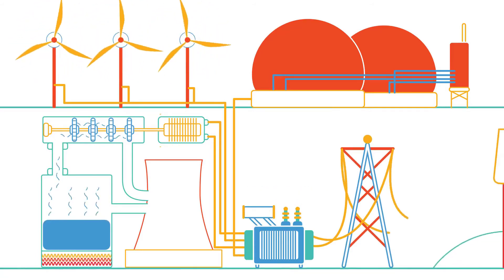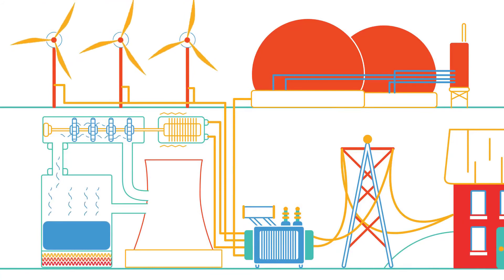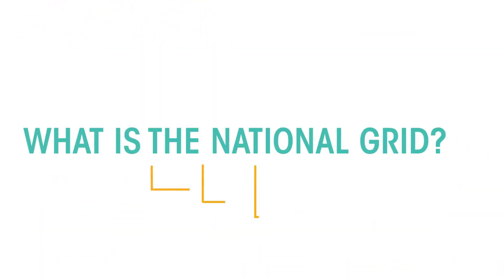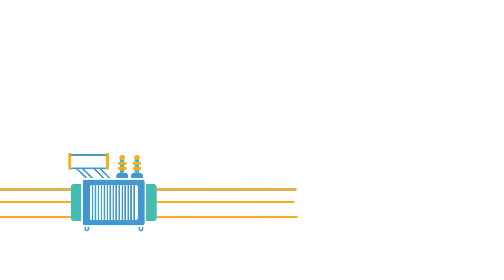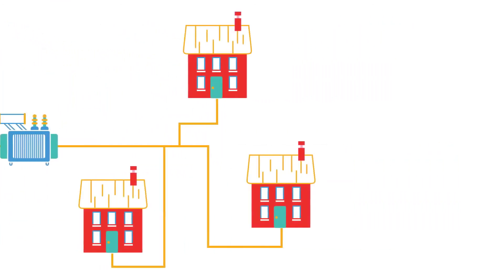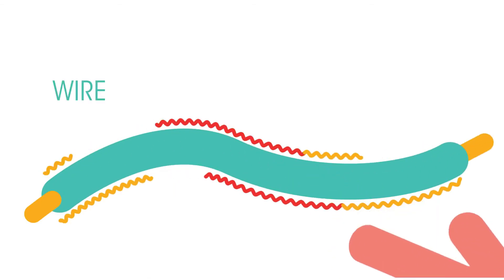So what exactly is the national grid? The national grid is a system of cables and transformers linking power stations to consumers. Have you ever felt an electrical wire and noticed it gets hot?